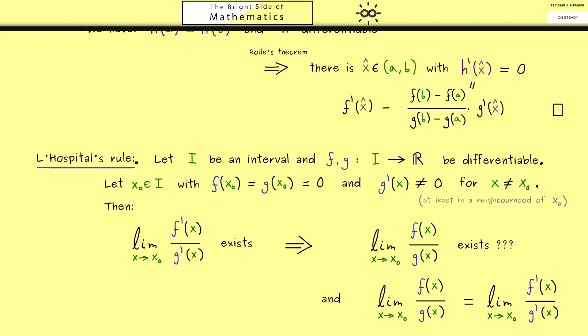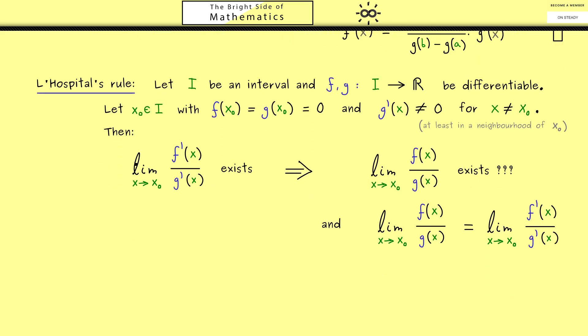We can just immediately apply our extended mean value theorem. In order to do this please recall that every limit is defined using sequences. Therefore let's choose such a sequence xₙ from the interval I which has not the value x₀. However it should get closer and closer to x₀ so it should converge to x₀. So let's denote it like this.